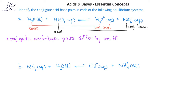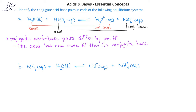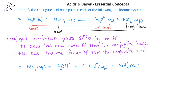Now that we've gone through this example, we can make another important note. When we have a conjugate acid-base pair, the acid of the pair will be the species that has one more hydrogen ion than the other species. The base of the conjugate acid-base pair will be the species that has one fewer hydrogen ions than the other compound in the conjugate acid-base pair. You should now pause the video and identify the conjugate acid-base pairs in problem B, then restart the video to check your answer.